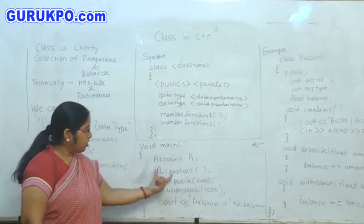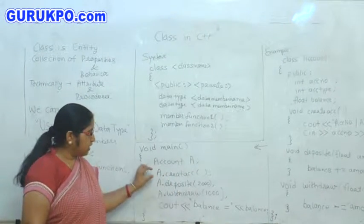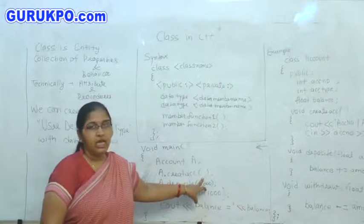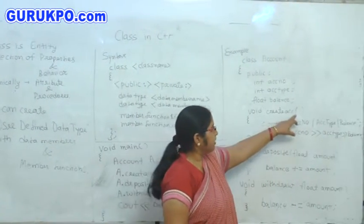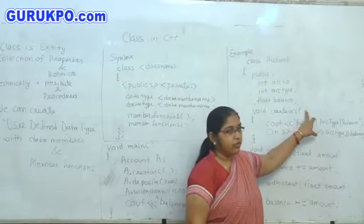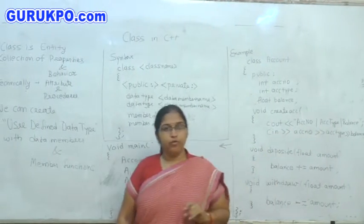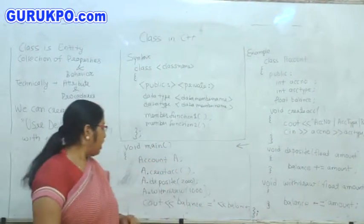Here we call the create account function and do not pass any argument because in this definition, we do not provide any of the argument in this function.